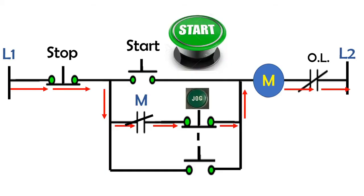When you release the start button, the current flow will divert from line 1, through stop push button, through normally closed auxiliary contact, through normally closed jag contact, through the magnetic coil, overload relay, then back to line 2.